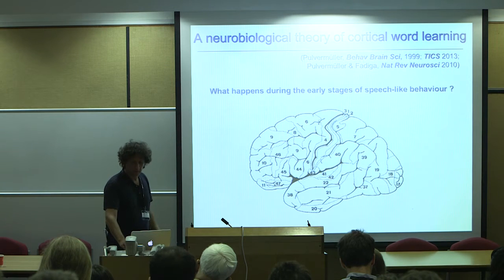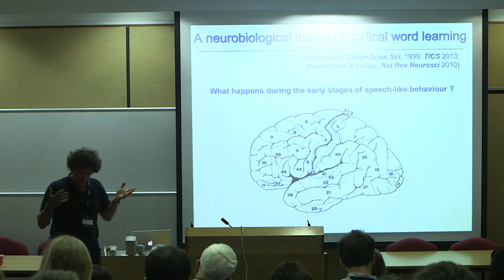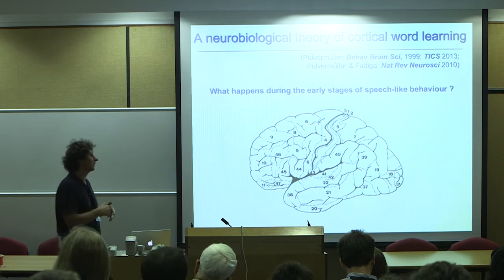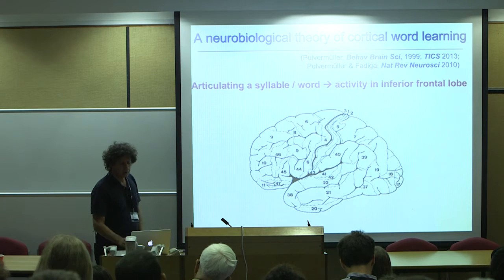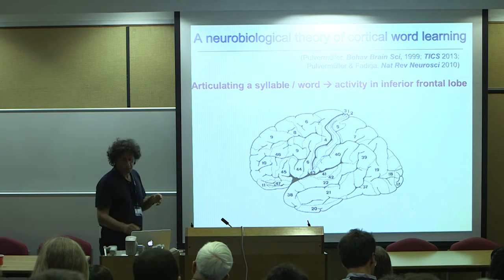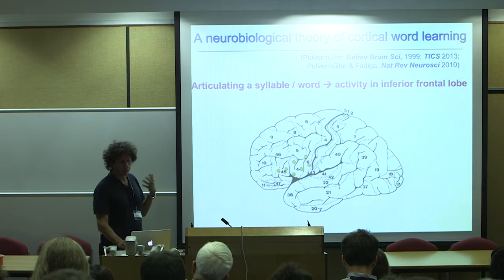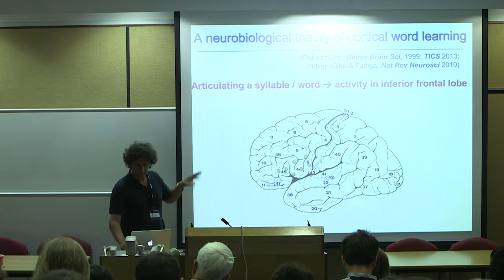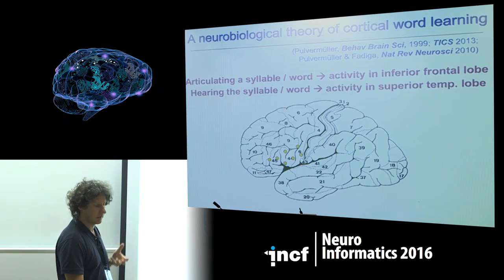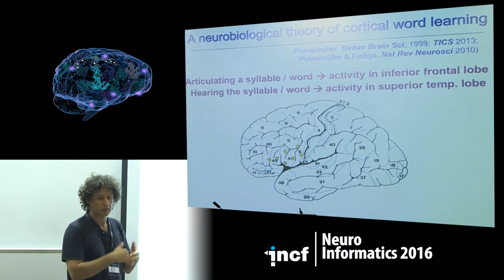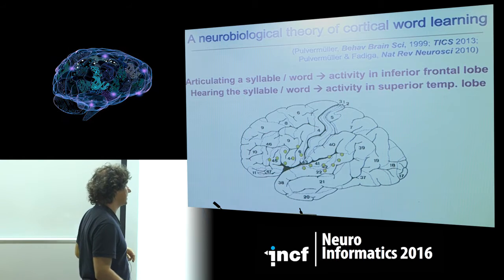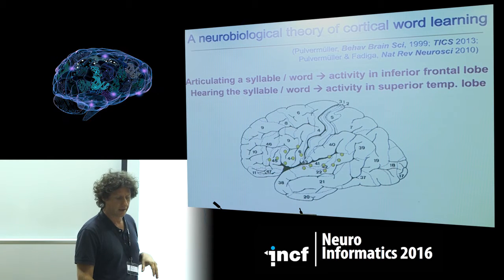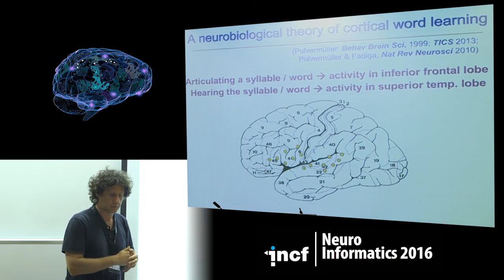The idea is rather simple. When children start learning how to speak, when they start babbling and early word learning, articulation of a syllable or of a word leads to activity in the inferior frontal lobe on the left side. At the same time, the sounds produced by this articulation are perceived by the superior temporal lobe, by the auditory cortex and the areas sensitive to speech perception.